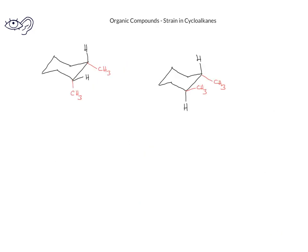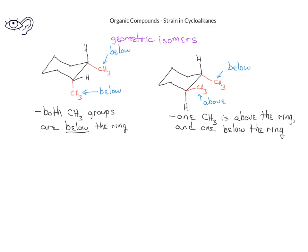In disubstituted cyclohexanes, we have another kind of isomer. These are compounds that have the atoms connected in the same way, but in these isomers, known as geometric isomers, the two substituents can be on the same side of the ring or opposite sides of the ring. If the two substituents are on the same side of the ring, this is called a cis isomer. If the two substituents are on opposite sides of the ring, we call this a trans isomer.